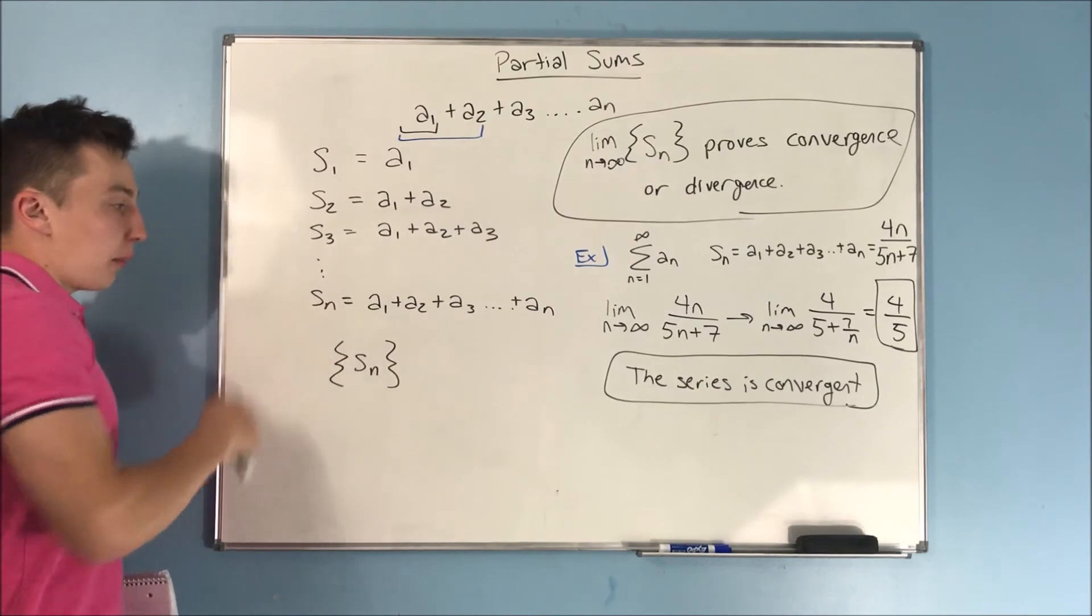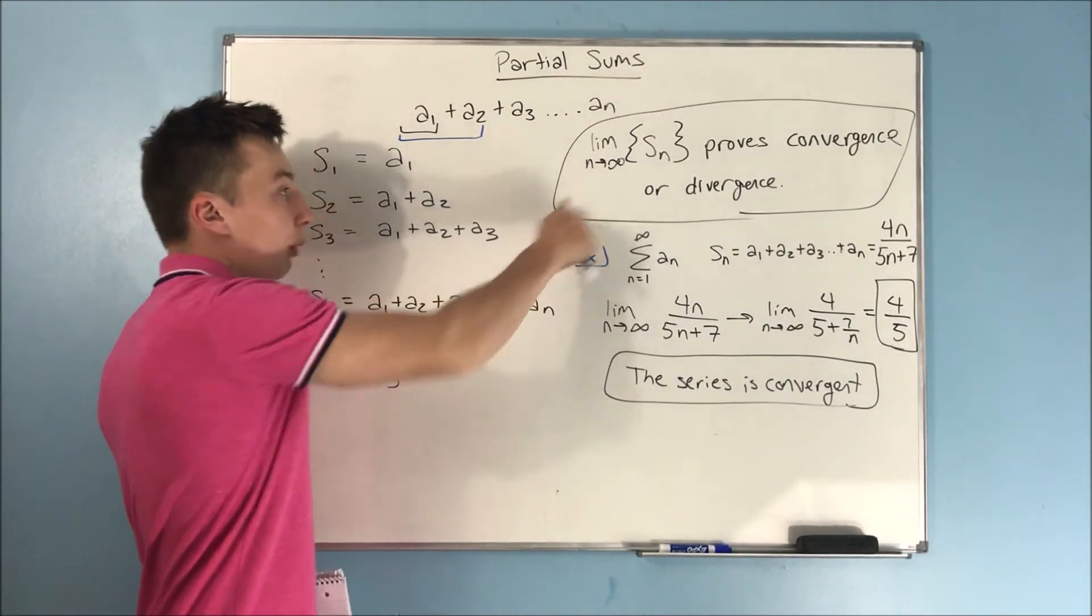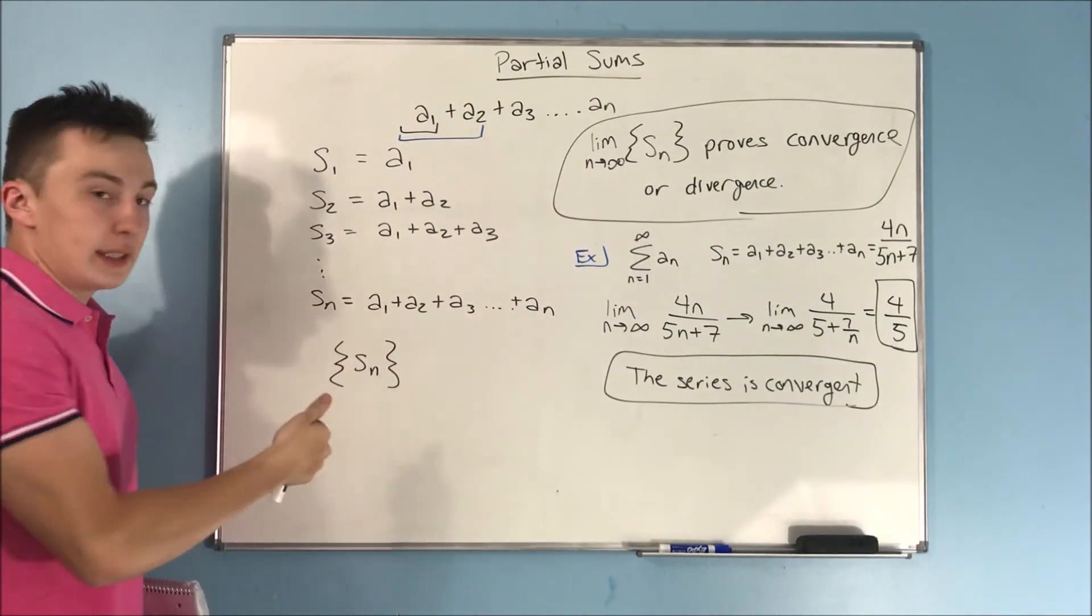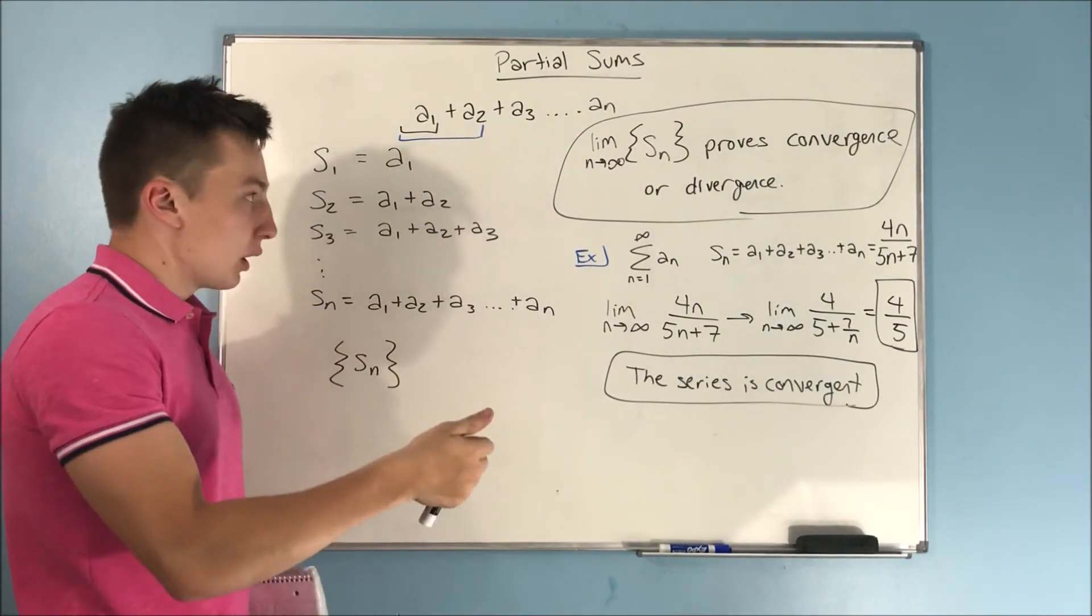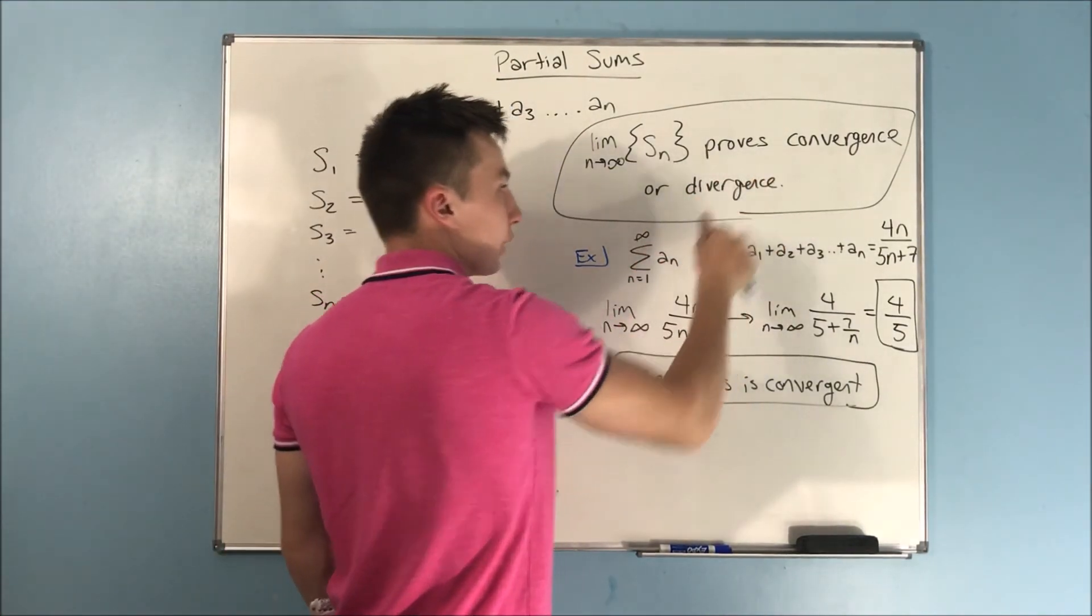We were able to transform a series into a sequence of partial sums. And this nth partial sum right here, if we take a limit as that n approaches infinity, we're literally taking the whole entire sum. So, that will help us prove convergence or divergence.